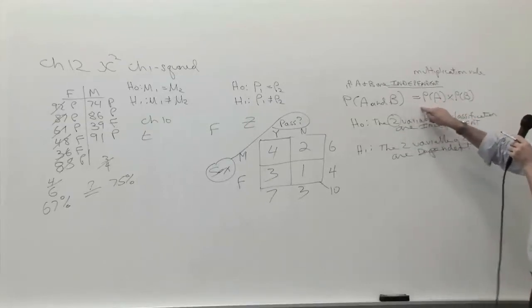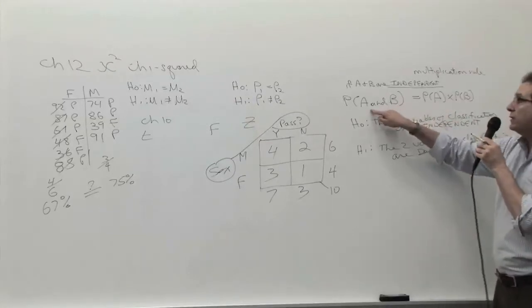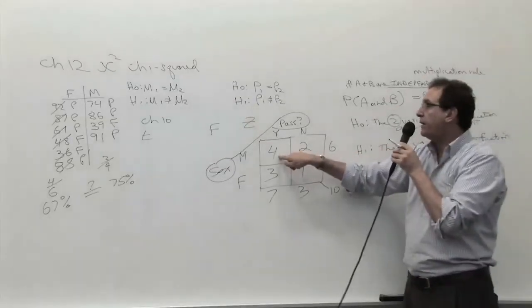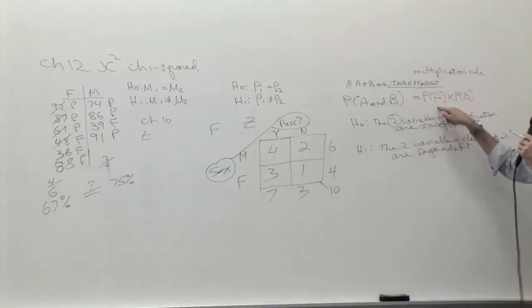Let's use this formula to calculate these numbers two different ways: once by reality, there are actually four people found here, and once according to the theory - if they were truly independent, how many people would be found here? So let's work it out.